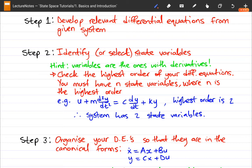And the second step is to identify or select state space models. And I did give a hint in the previous example, but here I've actually written it out. The hint is, variables are the ones with the derivatives. That means the differentiated variable is going to make up your set of state variables.